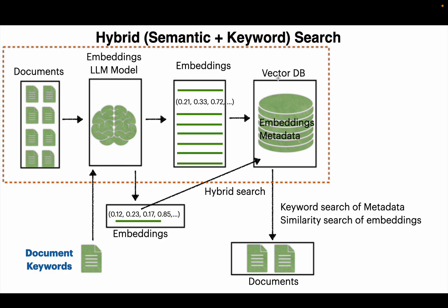In all the previous videos, metadata was optional — we did not insert any metadata into the vector database. For the hybrid search engine, in addition to the vector embeddings, we also store the metadata, which is the keywords, in the vector database. That is change number one. Change number two: in addition to the document, we also provide the keywords we would like to search for.